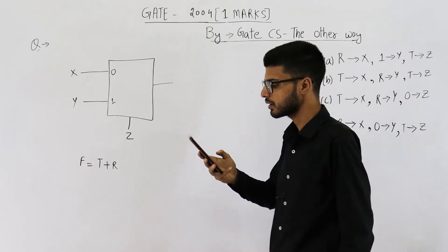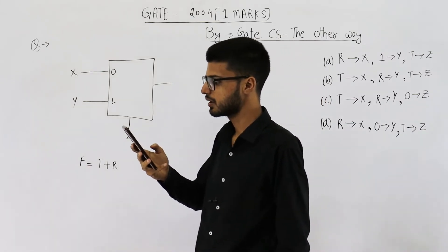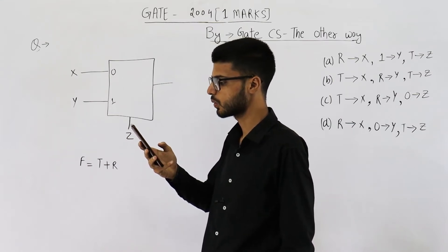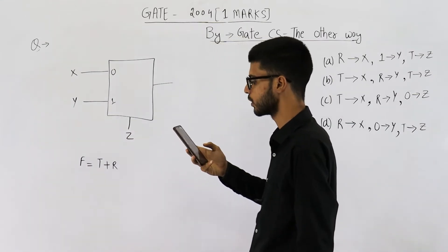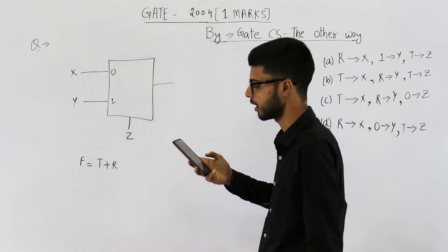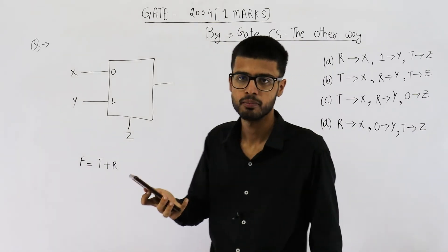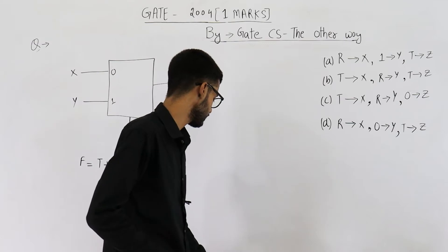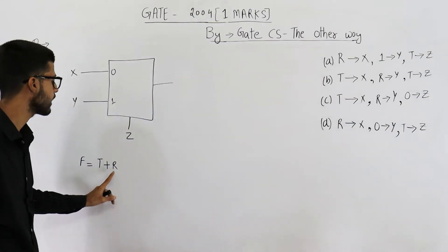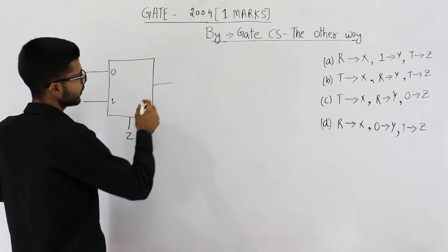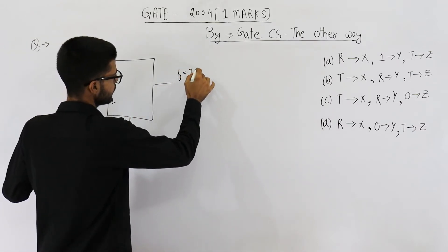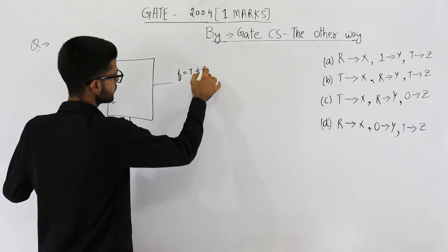What are the connections required to realize the two-variable boolean function f = t + r, without using any additional hardware? So we need to implement OR of two variables t and r. The required output is f = t + r.